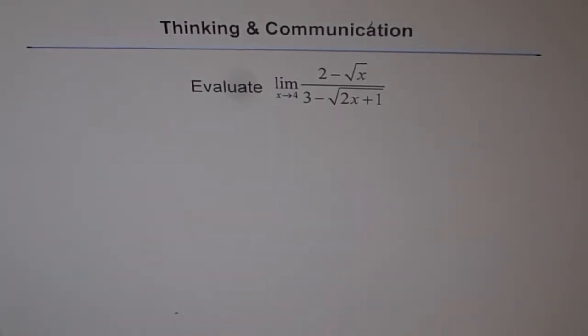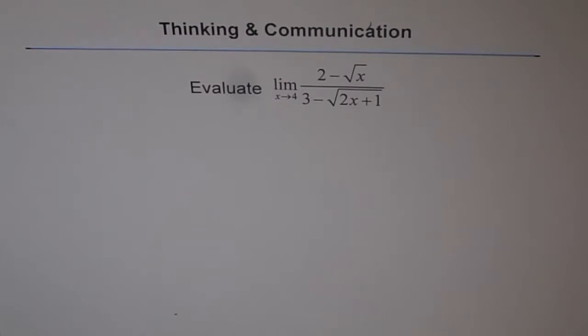Thinking and communication question. Evaluate the limit when x approaches 4 for (2 minus square root of x) divided by (3 minus square root of 2x plus 1).